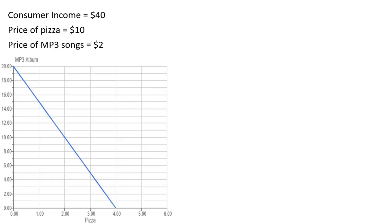Here's the budget line — we're putting MP3 songs on the vertical axis. Since the consumer has $40, 40 divided by 2 means this consumer could afford to buy 20 songs. On the other hand, if this consumer spent all $40 on pizza, 40 divided by 10 means they could buy 4 pizzas. So this is what the budget line looks like.